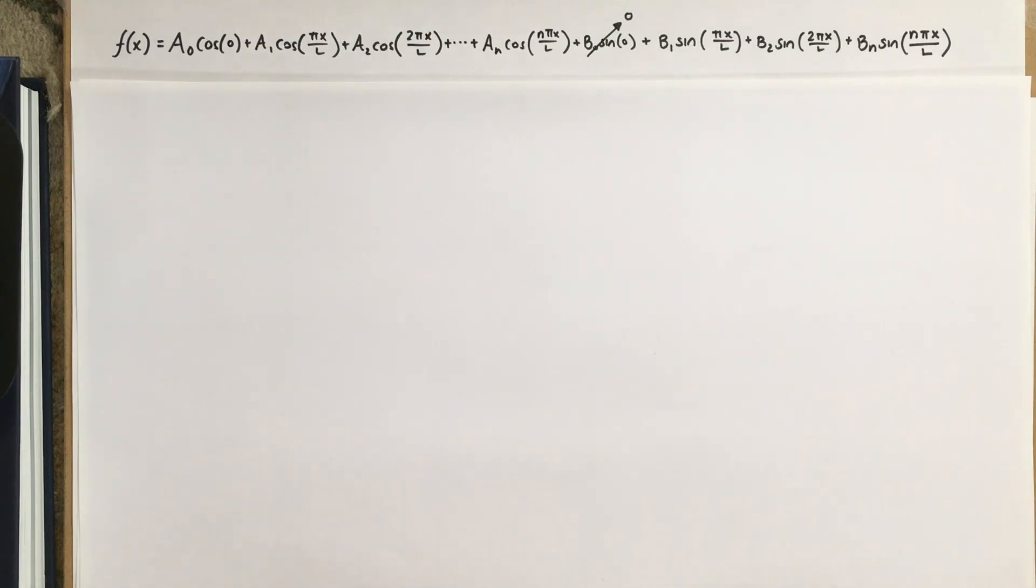But what exactly do I mean by that? Well, each one of those trig functions can be considered an infinite dimensional vector. And these vectors reside in the vector space of all continuous functions on the domain negative L to L. You might have remembered that we called that c of negative L to L. And remember that this orthogonality just means that the inner product of that vector space, which is the integral of every pair of those functions multiplied, is 0.